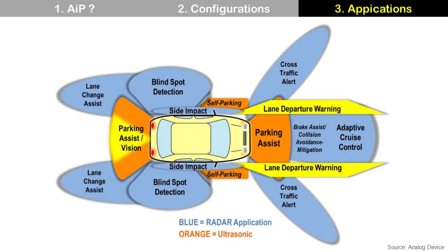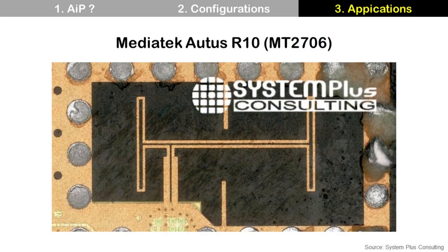In addition to 5G smartphones, AIP is also popular for automotive radar with a fan-out package format, because automotive radar uses high frequencies like 77 GHz, and fan-out is a good solution to minimize signal loss. This is an example: the MediaTek ARRIGO R10 MT2706 ultra-short-range radar operating at 76 to 81 GHz.